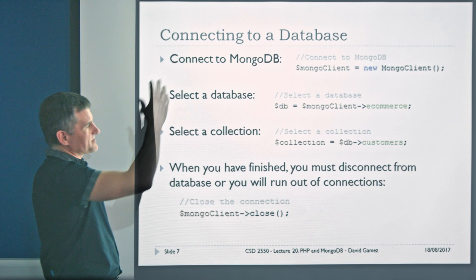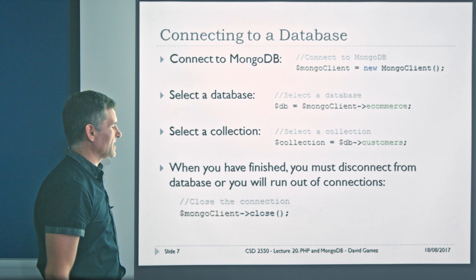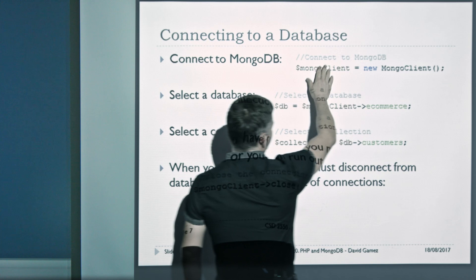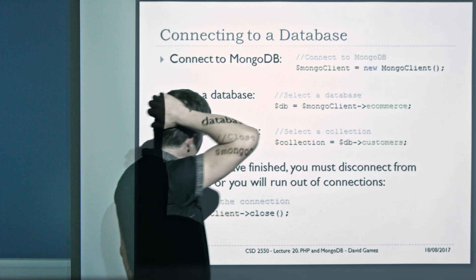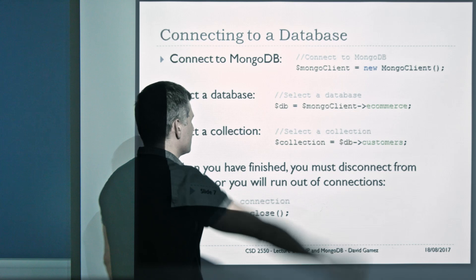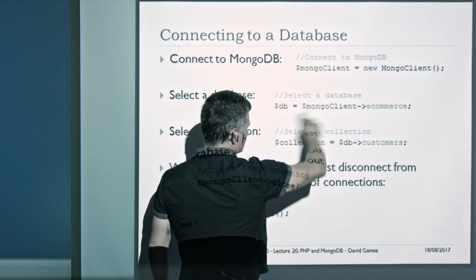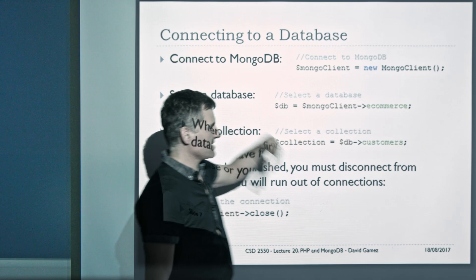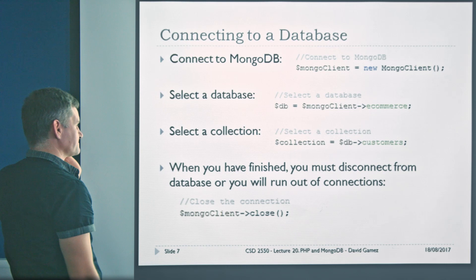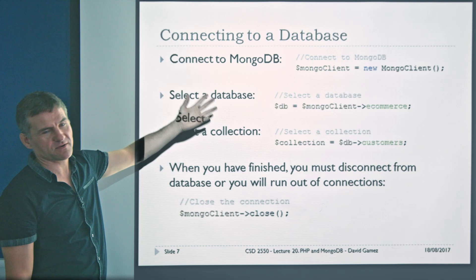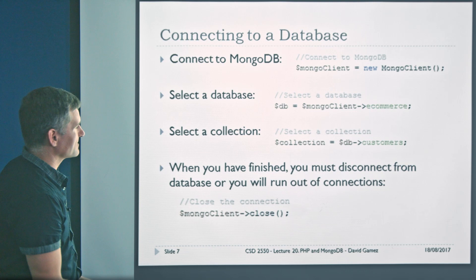Now I'm going to explain how you actually get it all working. Within your PHP scripts, you have some preliminary steps you'll need to do with every single script that uses MongoDB. You need to connect to MongoDB — get a reference to the MongoClient, create a new MongoClient, which basically connects to the database. You'd add authentication steps if you have an authentication database, and then you can select a database and select a collection. These are the setting-up stages you'll see at the beginning of all the scripts I'll give you.